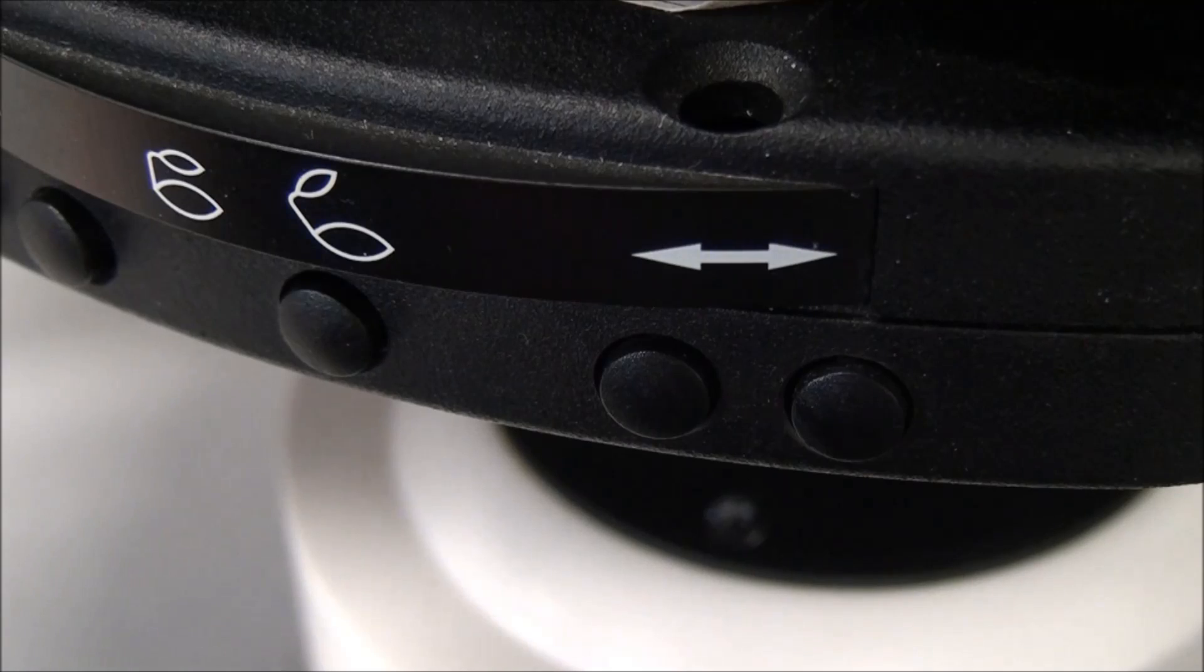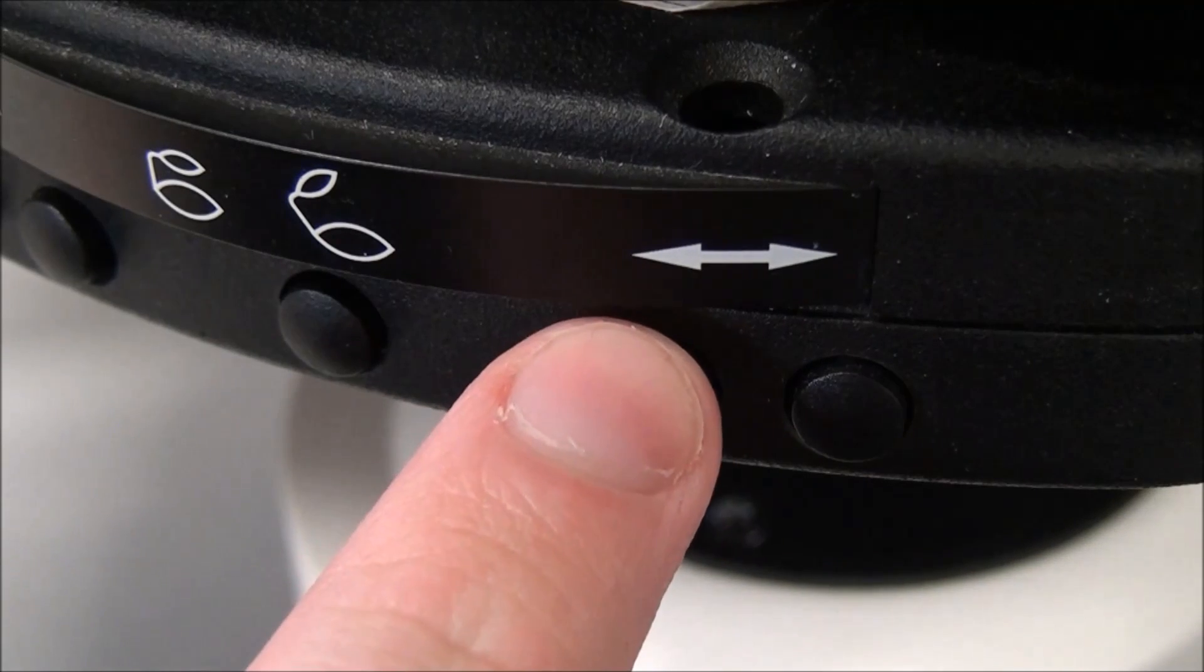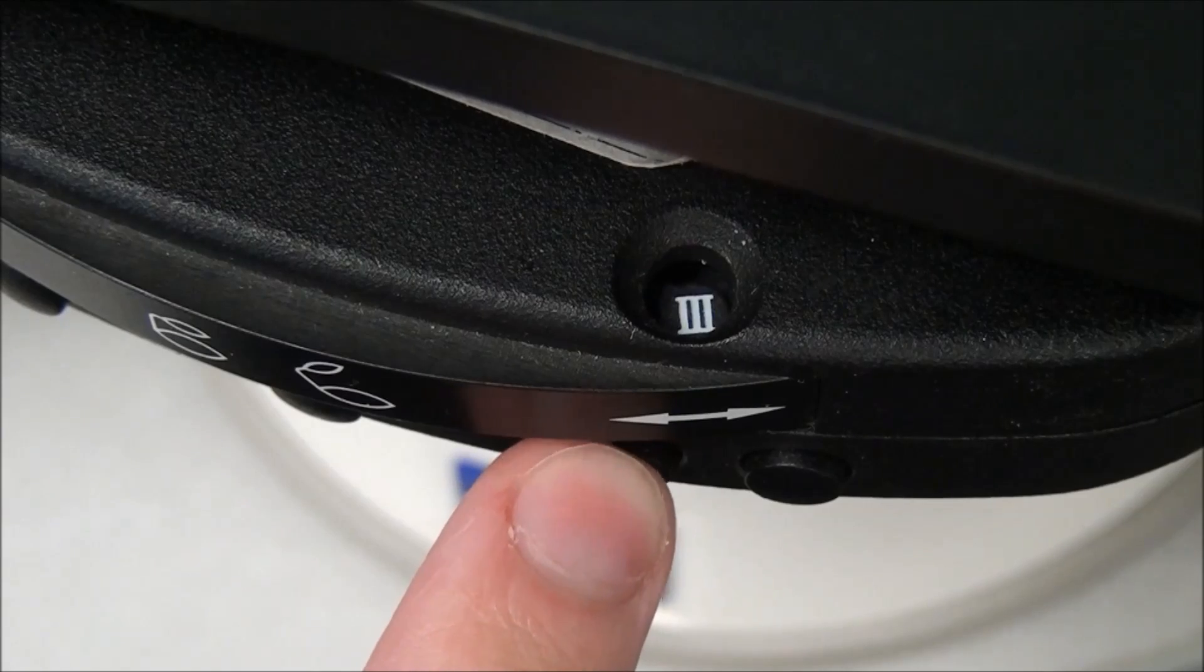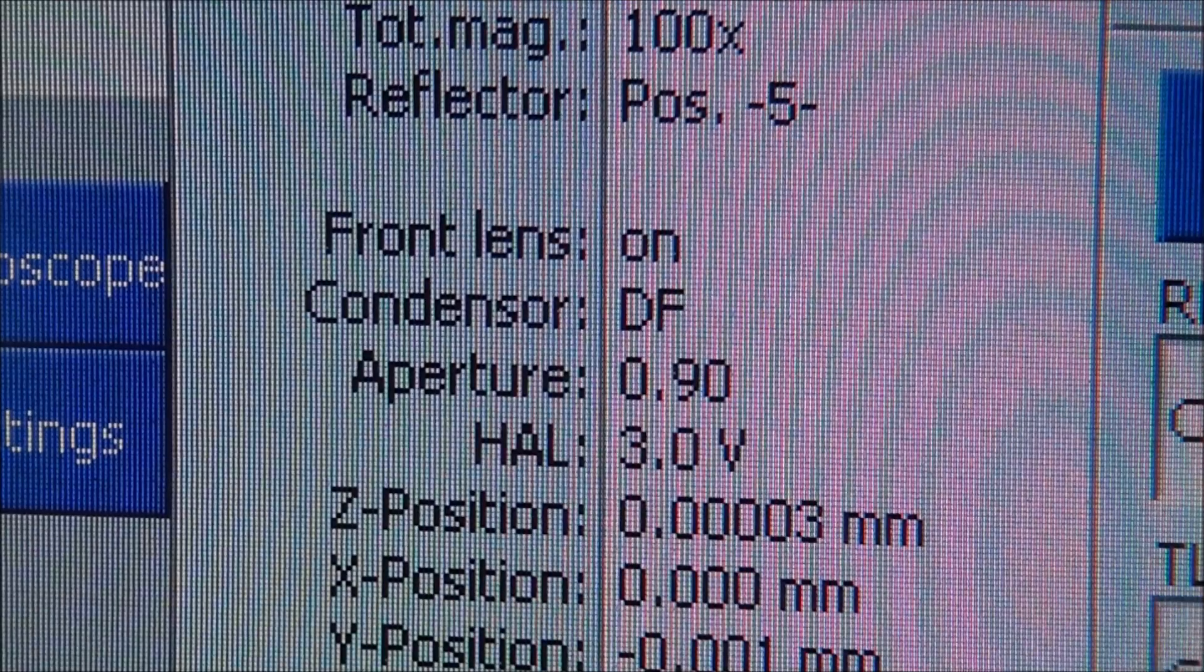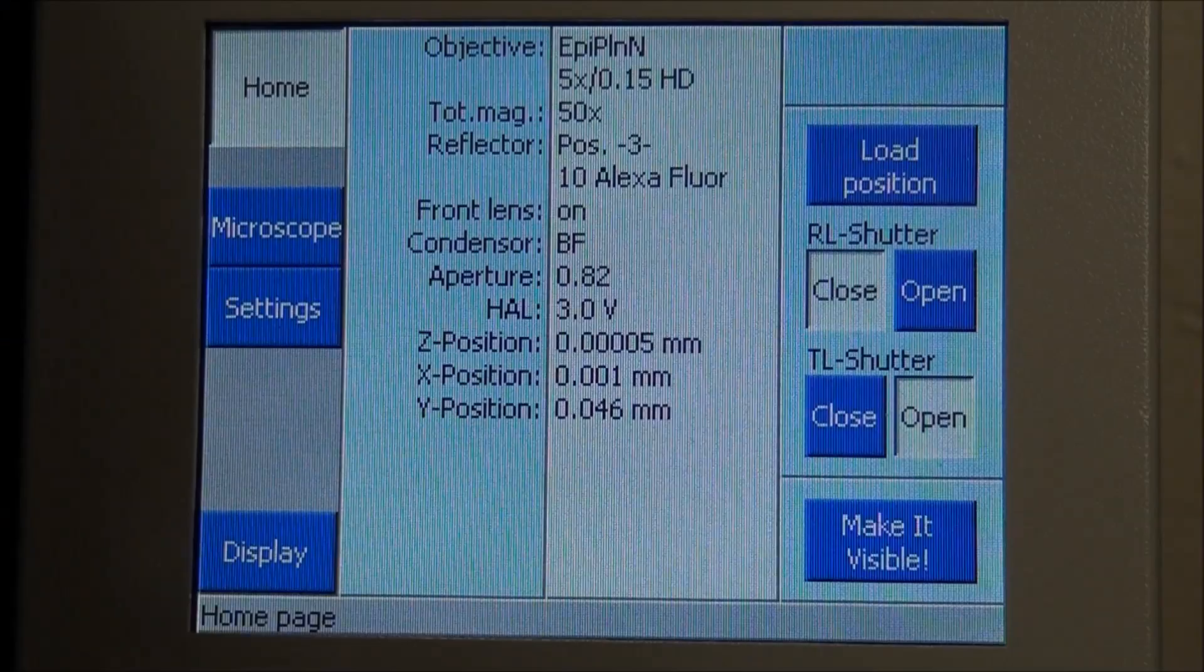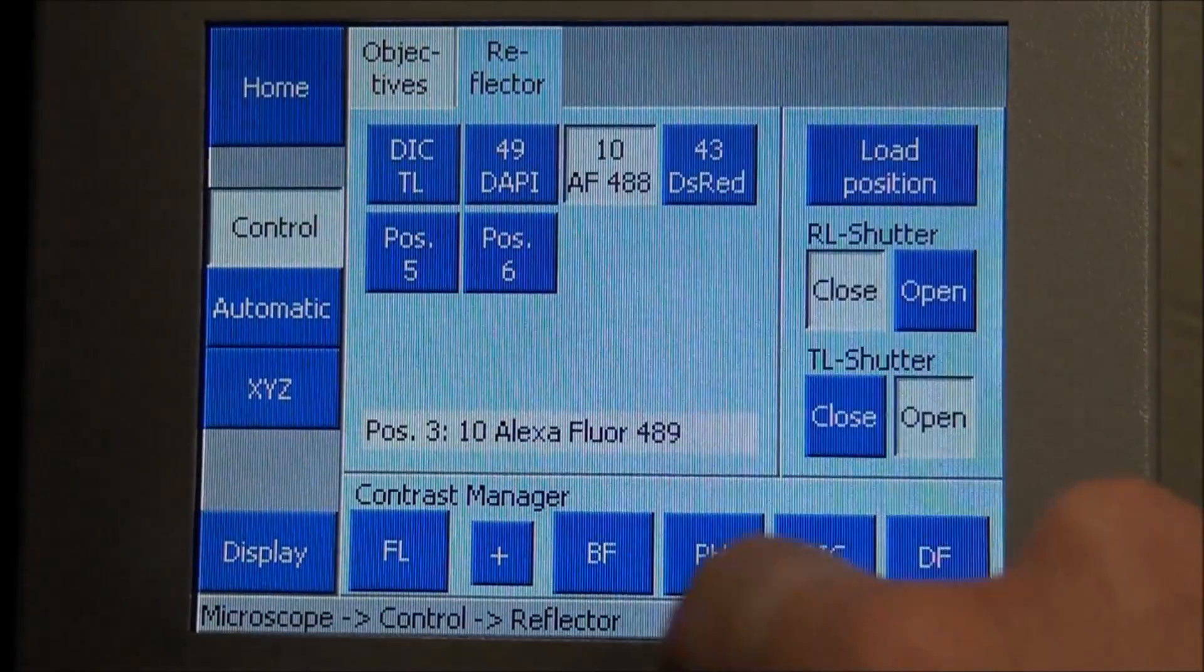Step 6: If the condenser allows for multiple contrast methods, set the current method to H for bright field. Sometimes this is labeled BF. Also make sure that your reflector turret is set to an empty or bright field position.